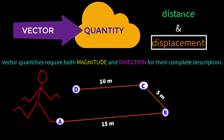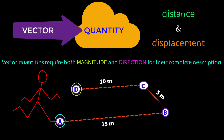Many students do not understand displacement. To calculate displacement of an object, we need to know only its initial position and final position. Then we need the distance between those two positions — that distance will be the displacement of the object. This A point is the initial position of the boy and this D point is the final position. If we add a line segment from this initial point to this final point, then only this portion will be the displacement of the boy.